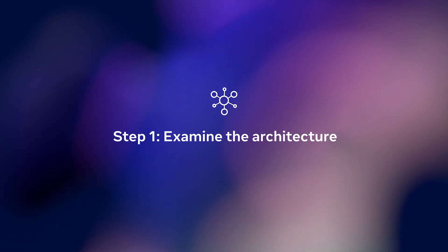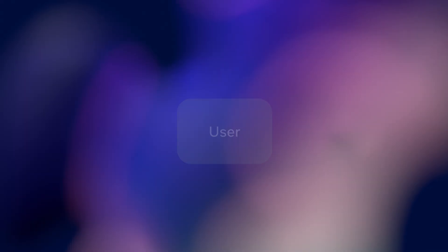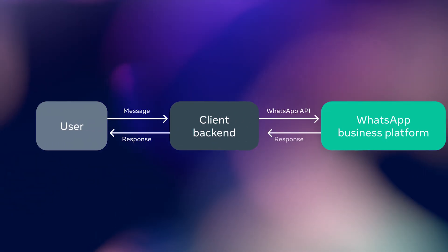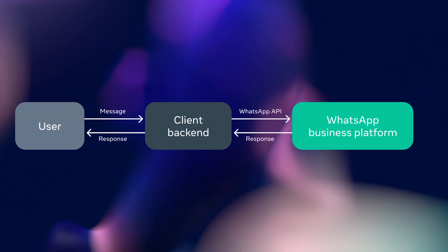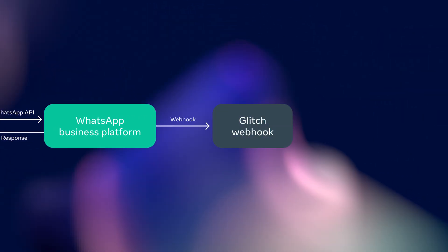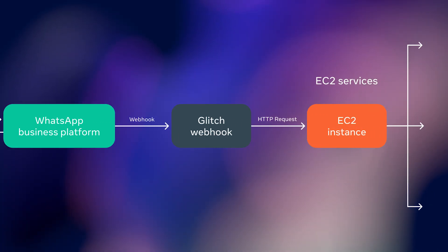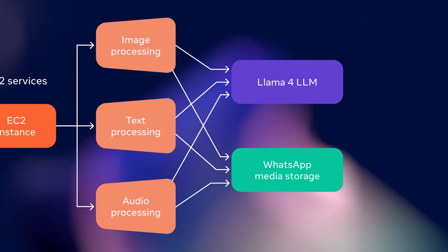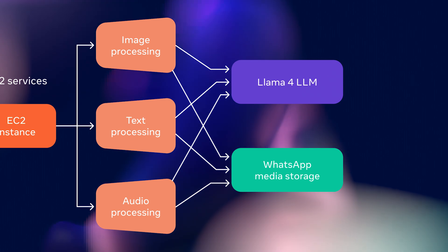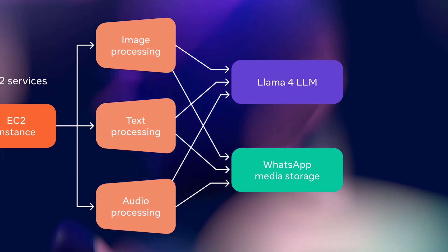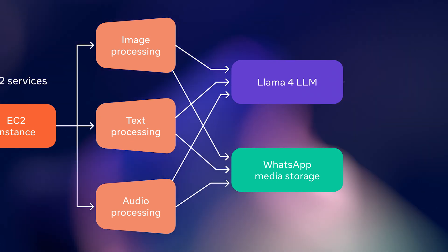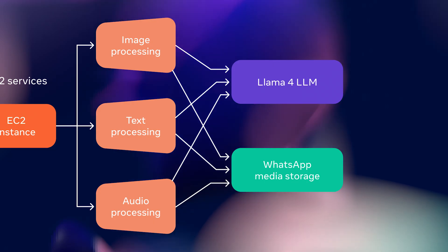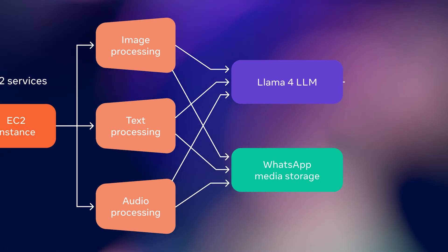First, let's examine the architecture. When a user interacts with a business on WhatsApp, those interactions go through the WhatsApp Business Platform to our FastAPI backend. In our demonstration, we use cloud-based services to process images, text, and audio interactions from business customers. The architecture includes dedicated modules for images, text, and audio, all integrated with Llama 4's language understanding capabilities.